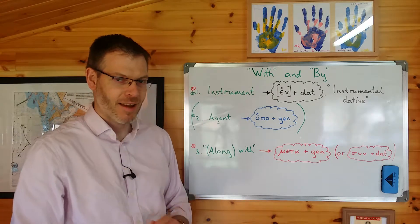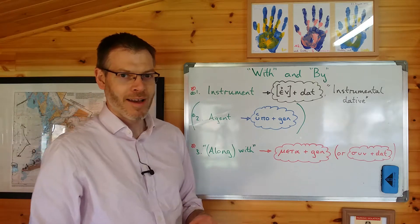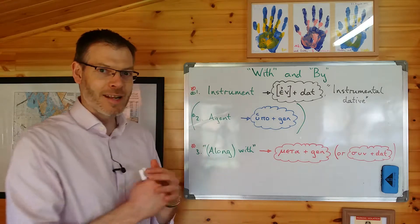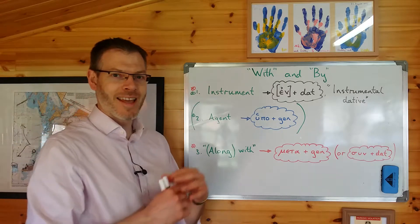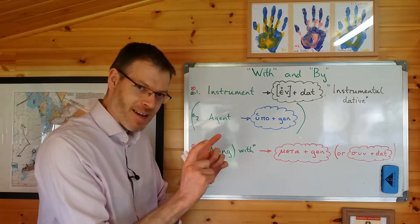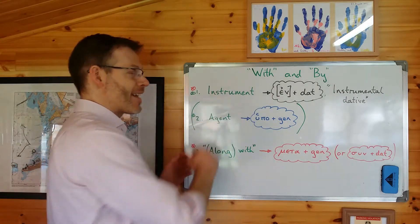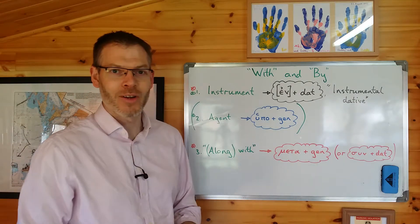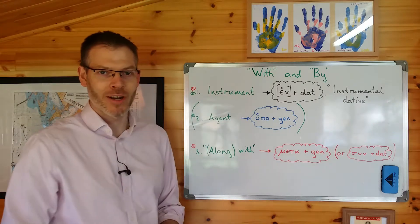So that's how to untangle these two English words, with and by, which create this confusion because both of them can be used in two different ways in English, which are represented in two different grammatical forms in Greek. Once you understand the meaning of what's being conveyed in English, then you can translate it into Greek. And of course, going from Greek into English is much easier because you understand the language that you're translating into. So once you understand the meaning in Greek, you can translate it appropriately into English.